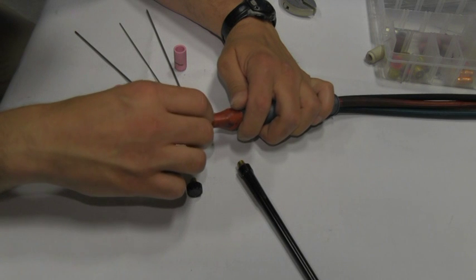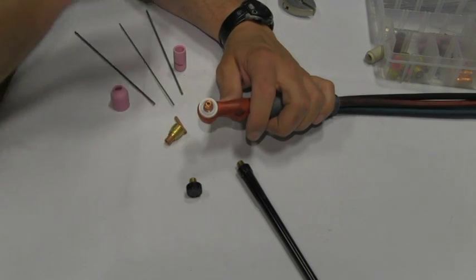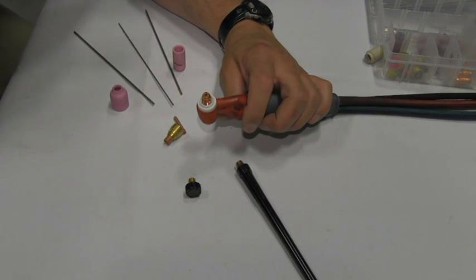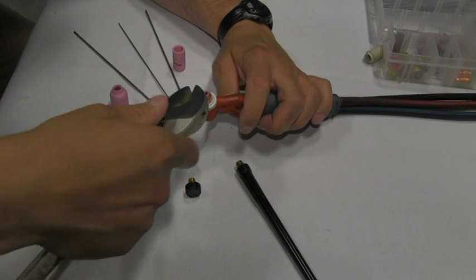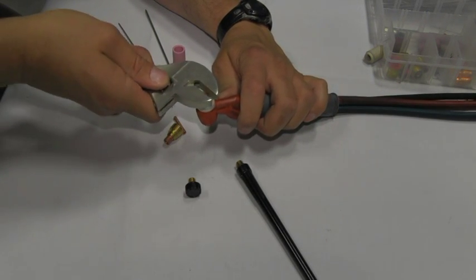So the first thing that I'm going to do is I'm going to install it, just screw it in hand tight into the threads of the torch. Now on that collet body, the shielding gas flows through it, and flows out of these big holes, and so does the welding current. So since welding current flows through this part, it's really important to tighten it down really tight. So I'm going to take my wrench and I'm going to snug it down so that I'm sure that it's tight.